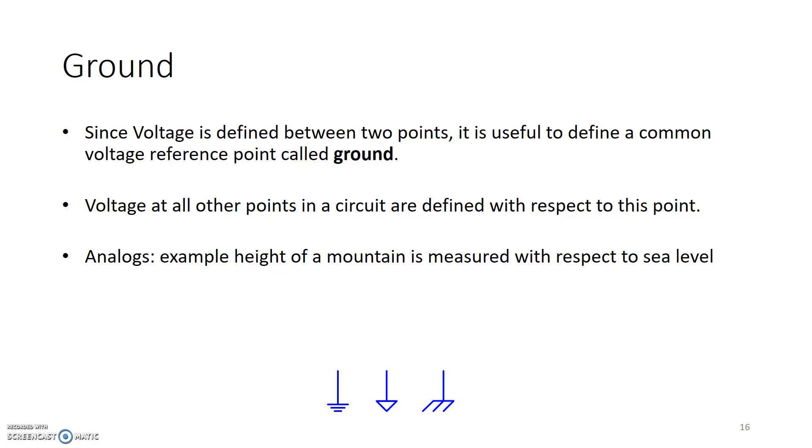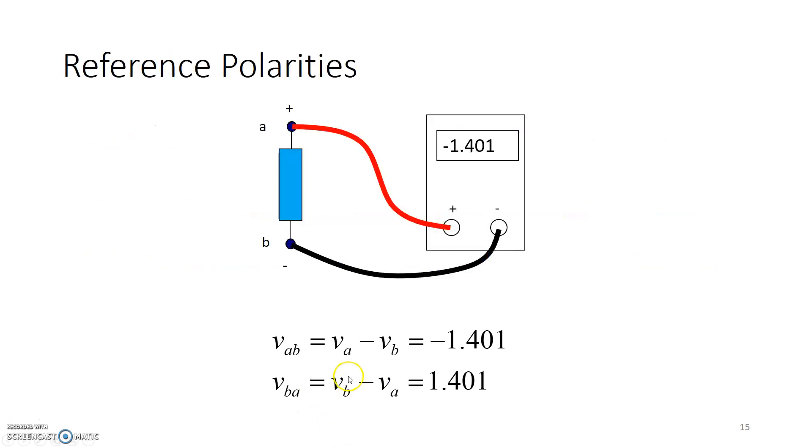Similarly, comparing voltages between different nodes becomes easier if we can reference it to a single point, and we call that particular reference point a ground. So ground has a voltage of zero volts. So in our prior example, when we said VA, that basically meant we were looking at the voltage at node A with respect to a common node called ground somewhere. And when we said VB, we basically meant we were looking at node B voltage with respect to a reference node ground somewhere else.